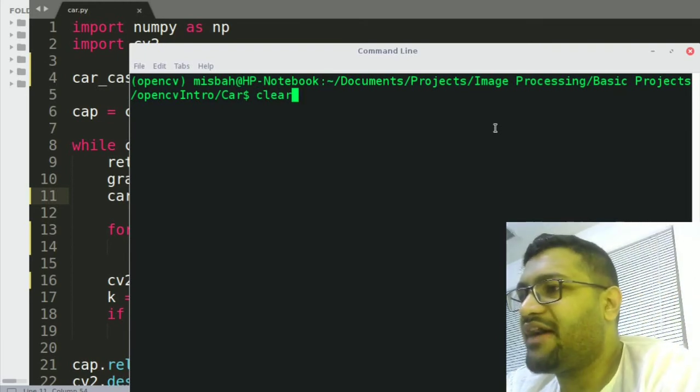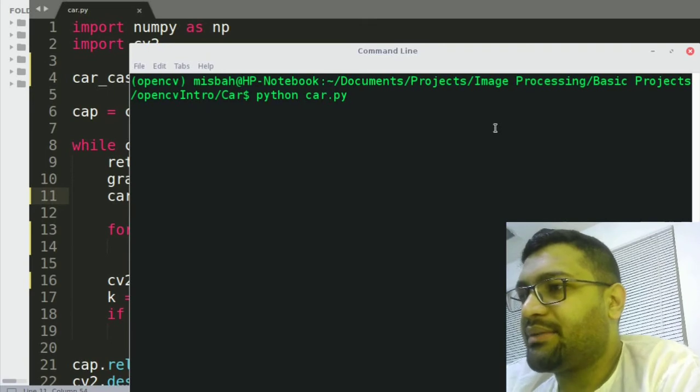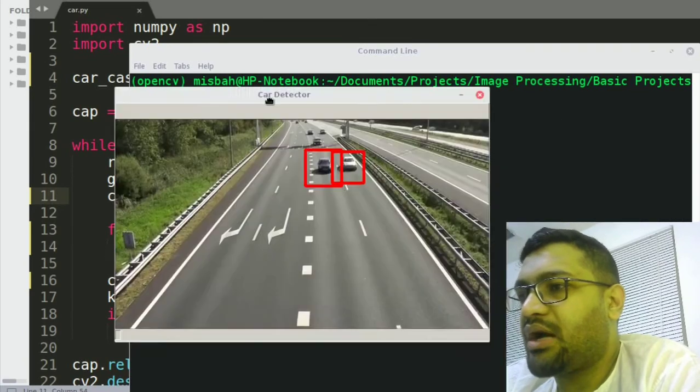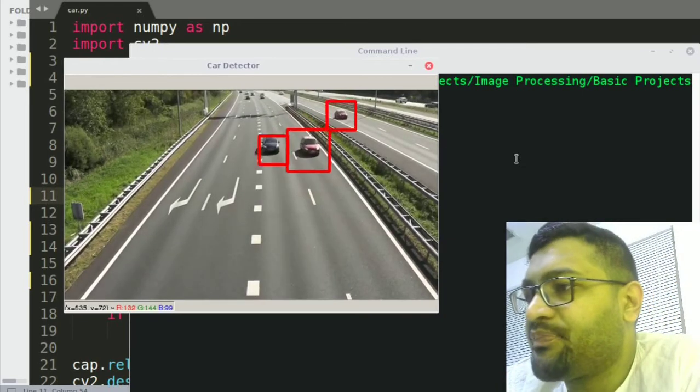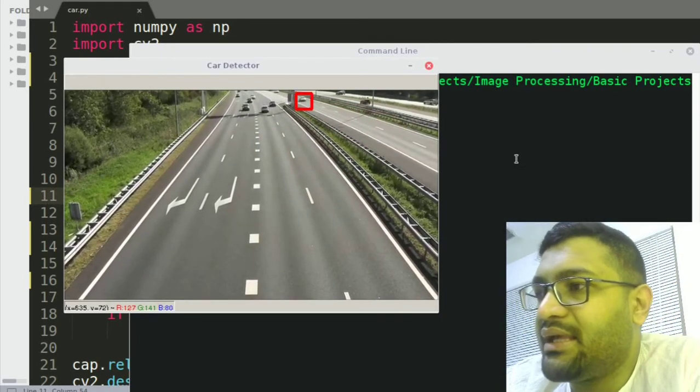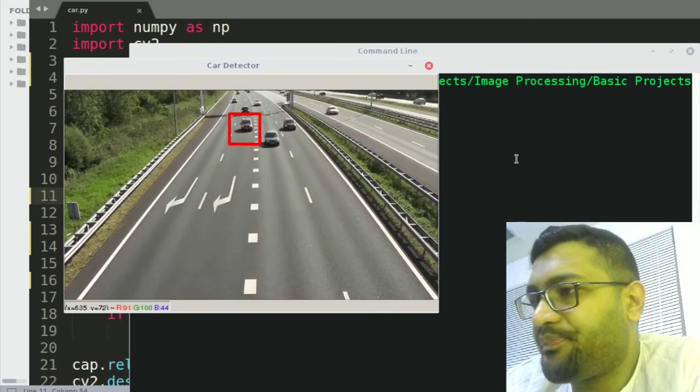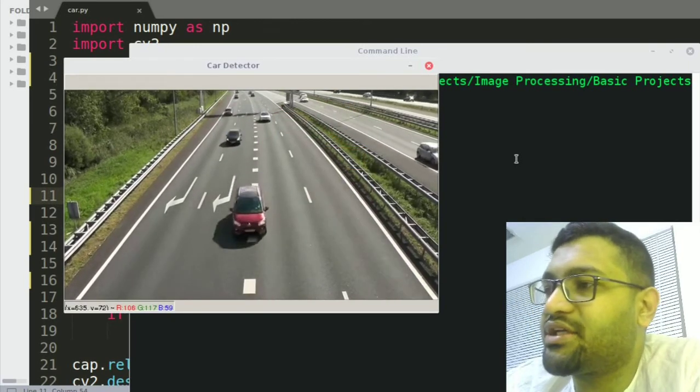So I have my OpenCV Python ready and I'm gonna run this program python car.py and you will see how the car detector is working. It's a video of a highway and then cars are passing by and you see the car detector working.